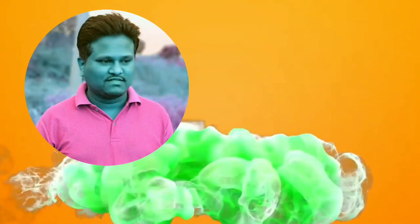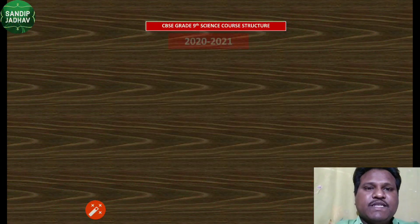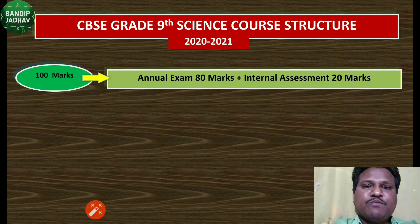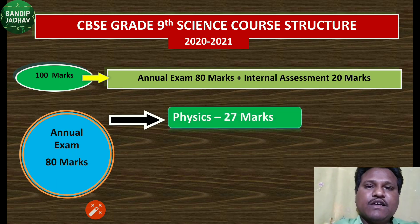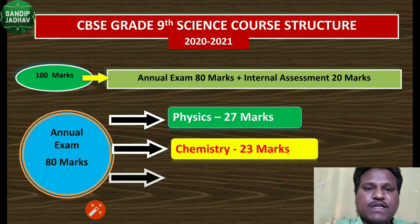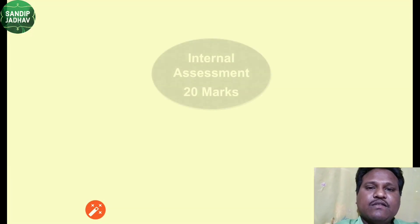Let's see the CBSE Grade 9 Science course structure for the academic year 2021. The evaluation is based on 100 marks, which is further divided into two components: the annual exam of 80 marks and internal assessment of 20 marks. The annual exam of 80 marks is divided into three subjects — Physics carries 27 marks, Chemistry carries 23 marks, and Biology carries 30 marks.